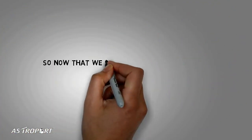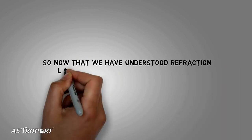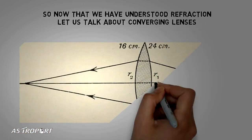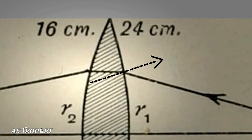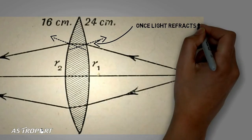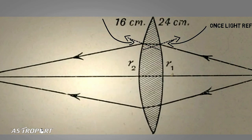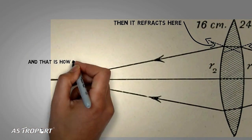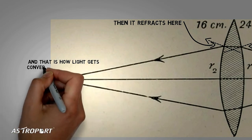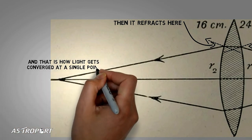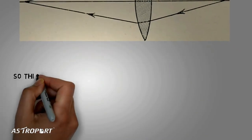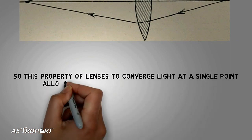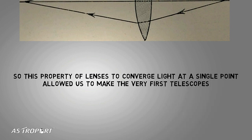Now that we have understood what refraction of light is, let us take a look at the converging lens. You can notice that the incident ray refracts towards the normal as it enters the lens, and it refracts again — this time away from the normal — as it exits the lens. Lenses are designed so that all the rays coming out of the lens converge at a single point, and this property allowed us to make refracting lenses.